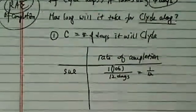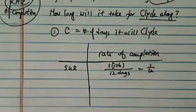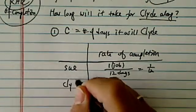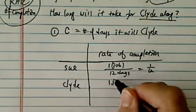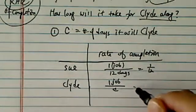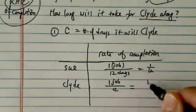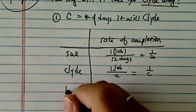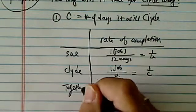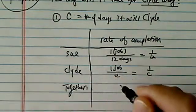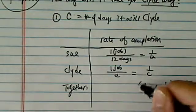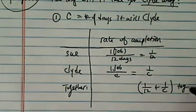That's how fast she can complete the job — she completes 1/12 of the job in a day. Now Clyde does one job, but we don't know how fast he can do it, so it's 1 over C. Now here's the tricky part: together, their rate is 1 over 12 plus 1 over C. This is the together rate.